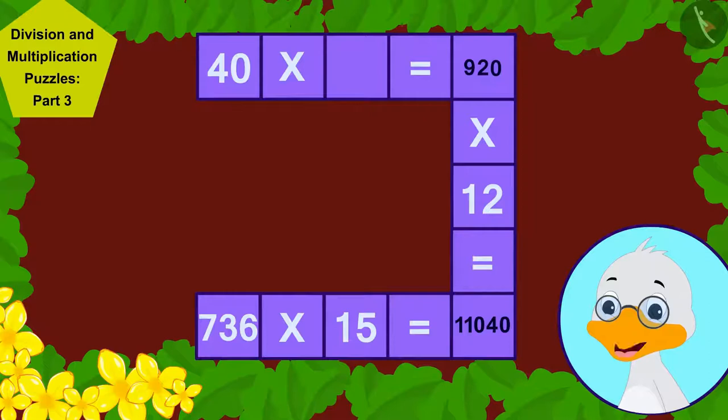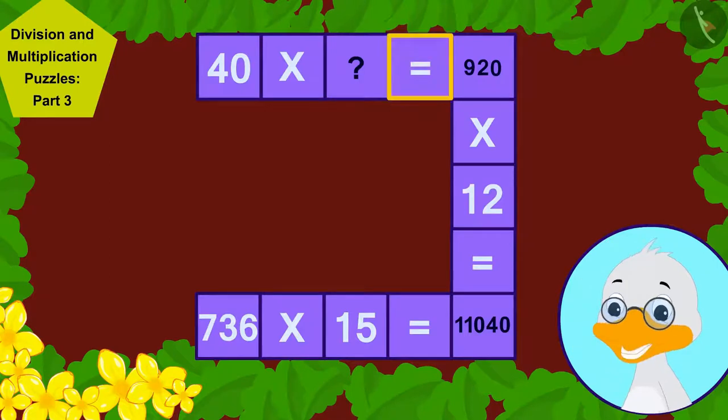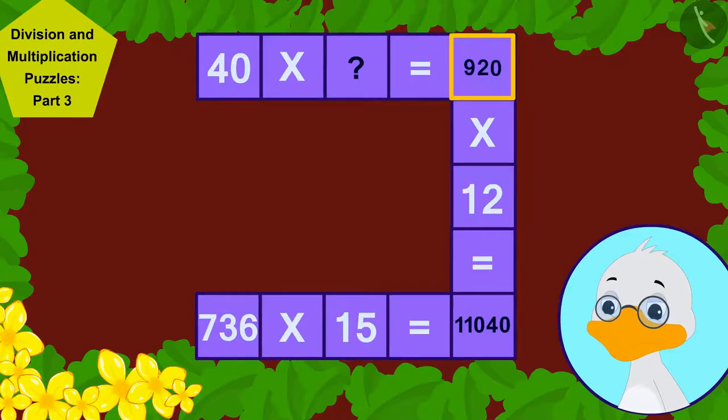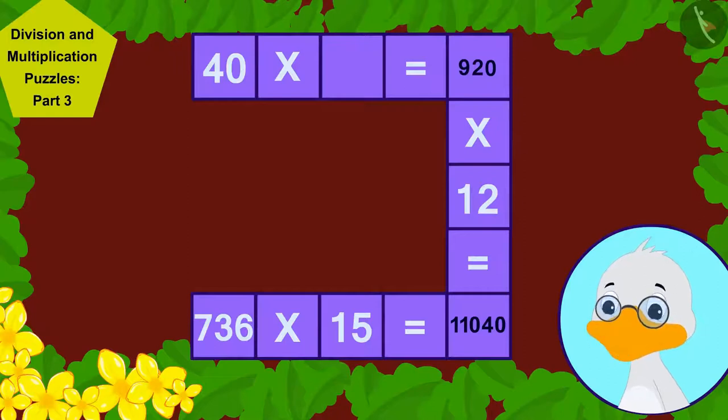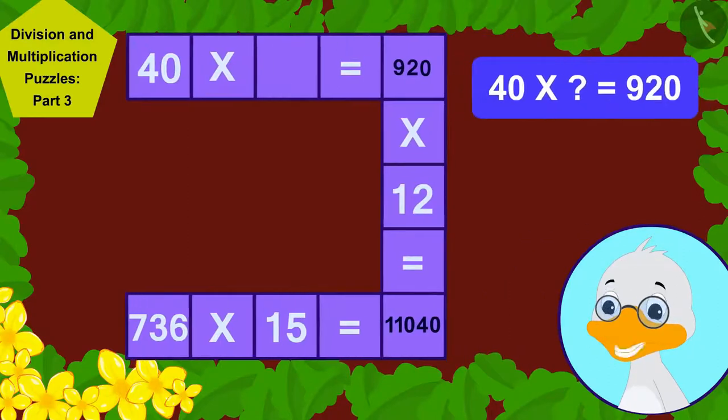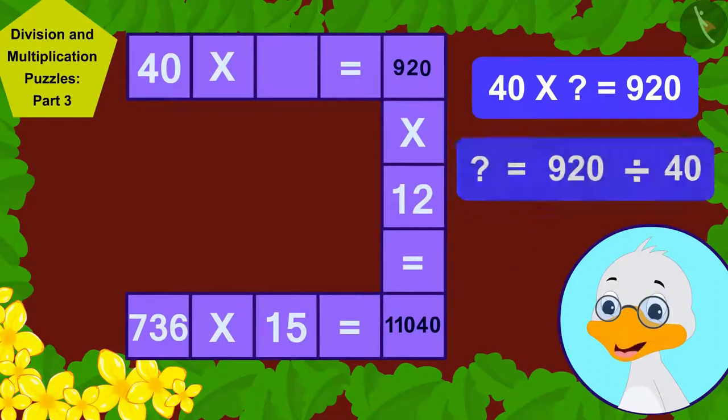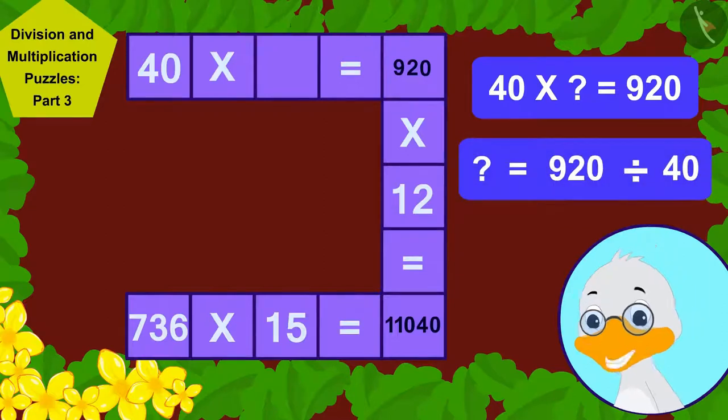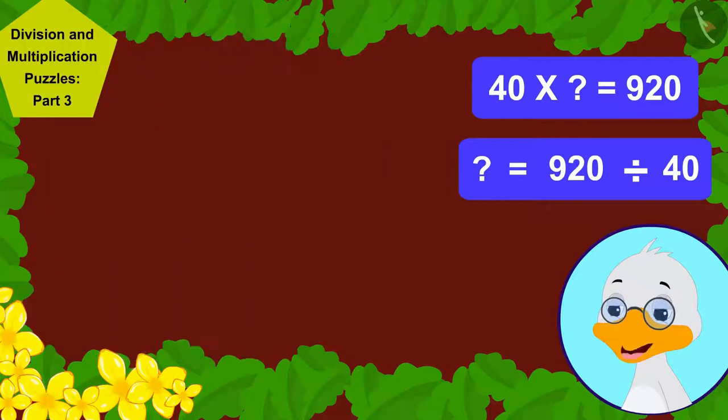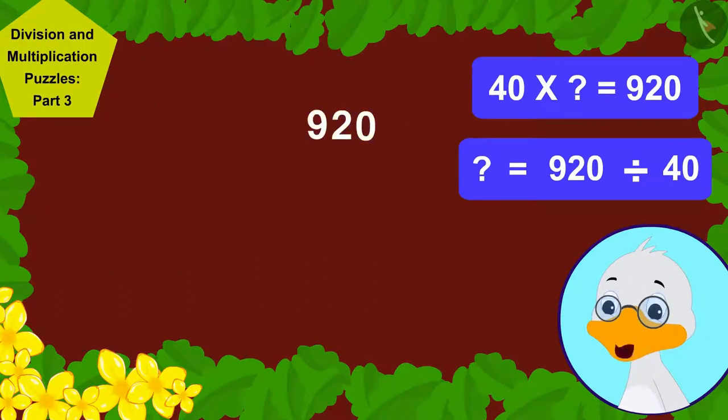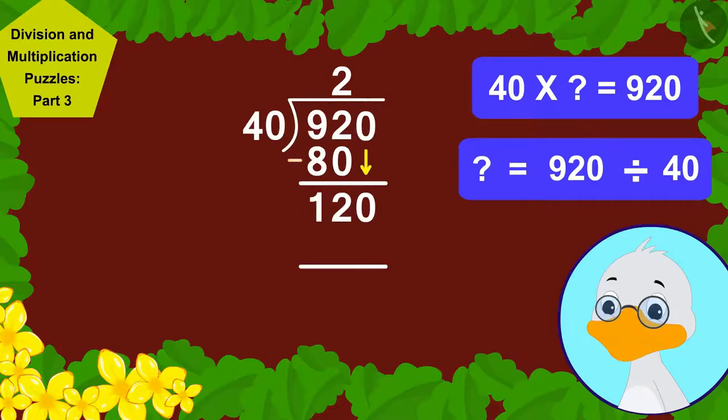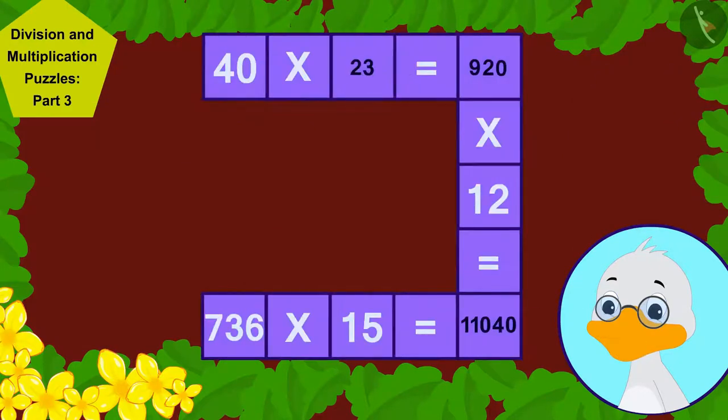All I had to find was the number which when multiplied by 40 gives the answer 920. Once again, by writing this multiplication as division in this way, I wrote the answer of 920 divided by 40,